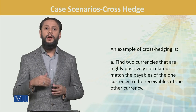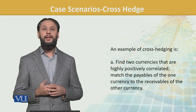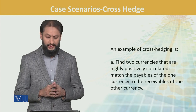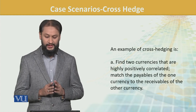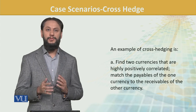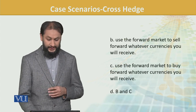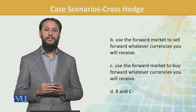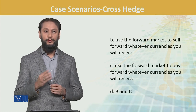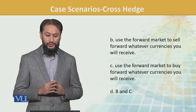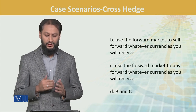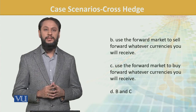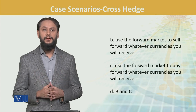What are the scenarios to guide your selection? Option A: find two currencies that are positively correlated and match payables of one currency to receivables of another. Option B: use the forward market to sell forward whatever currency you will receive. Option C: use the forward market to buy forward whatever currency you will receive. Option D: both B and C. Which one of these is a cross hedge?